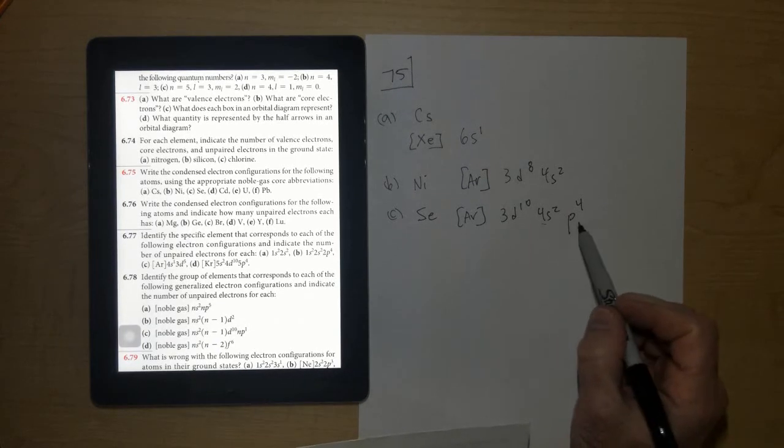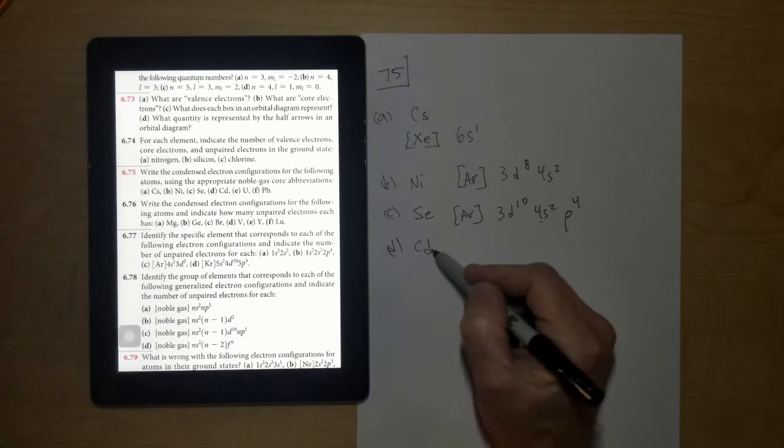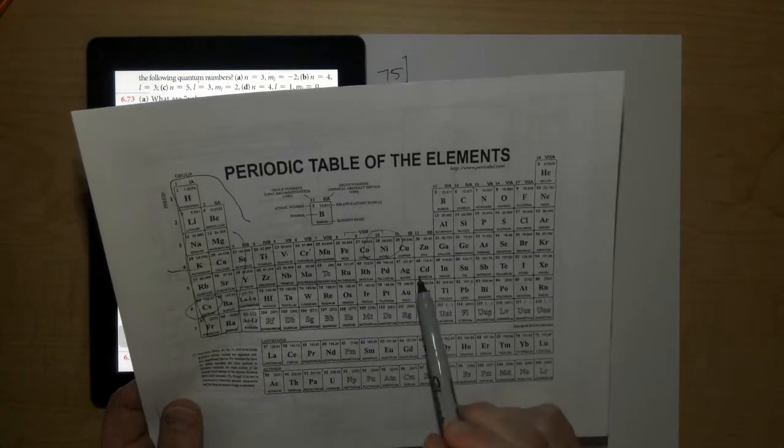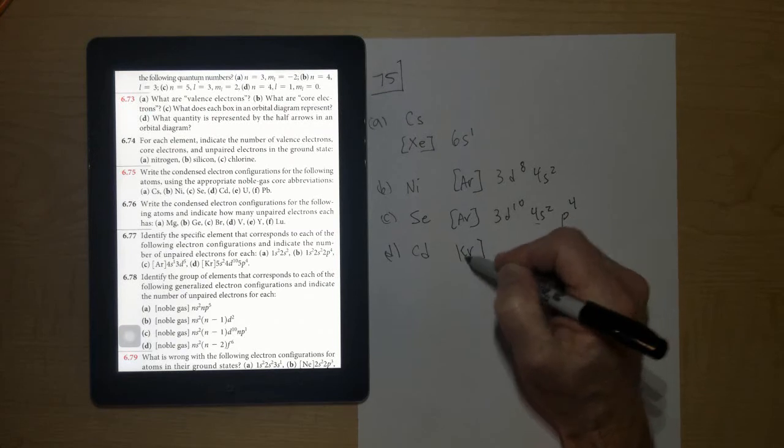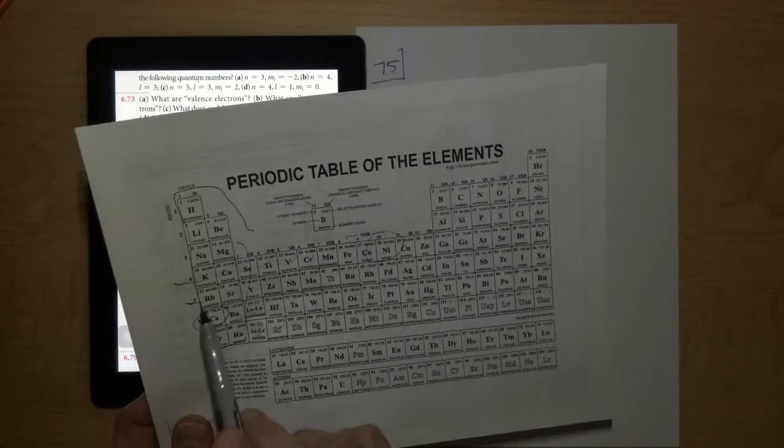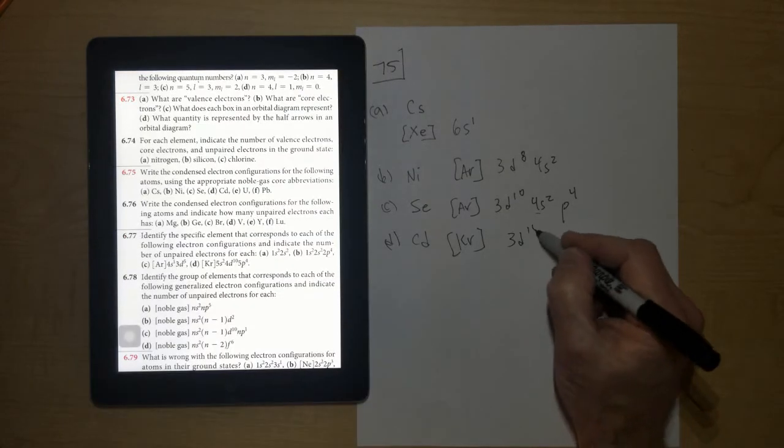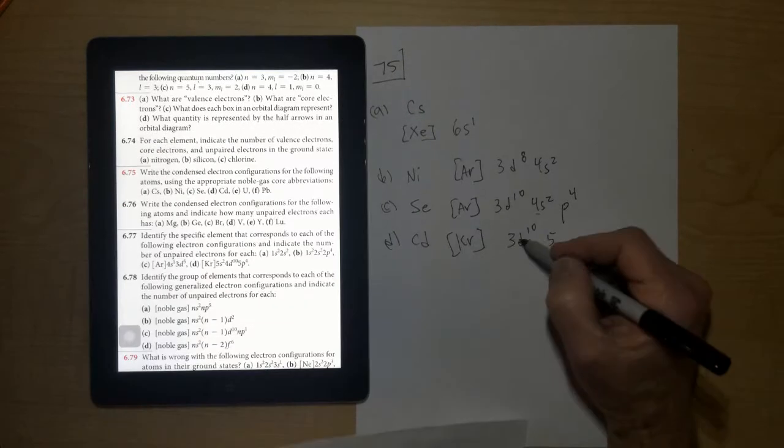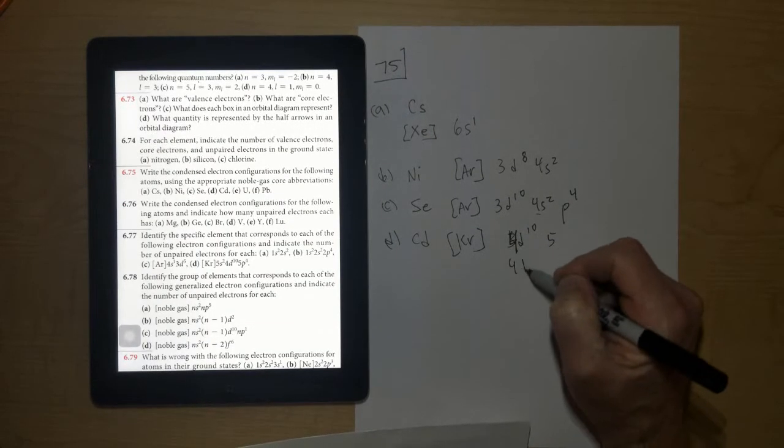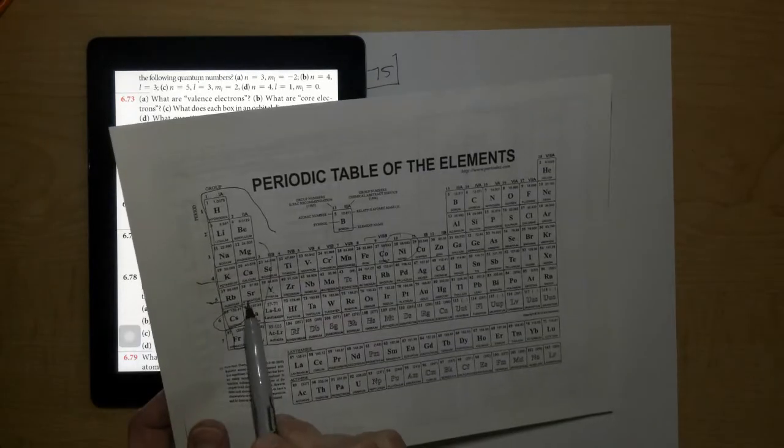Letter D is Cd. So the element cadmium is right here. That's in the fifth period. So the noble gas preceding it is krypton. So you'd put Kr for krypton. And then you'd go 5S2, 3D10. So 3D10, and then 5, I'm sorry, 4D. There should be a 4D10. My apologies, 4D10. And then 5S2 because those are also filled right there.